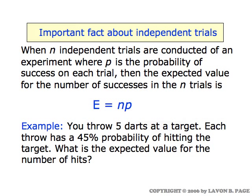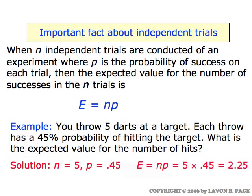Suppose you're throwing five darts at a target. Each throw has probability 0.45 of hitting the target. What's the expected value for the number of hits in the five throws? In this case, the number of throws is five and the probability of a hit on any given throw is 0.45. Multiply the number of trials times the success probability, and we get two and a quarter — which simply says that on average, if you throw five darts, you'll hit around two and a quarter times in your five throws.